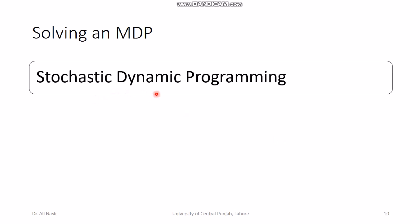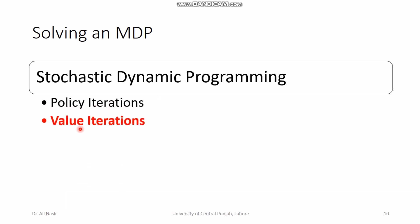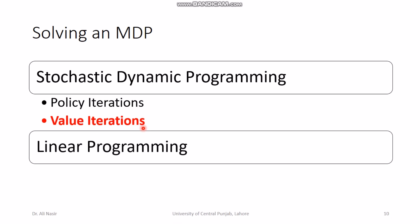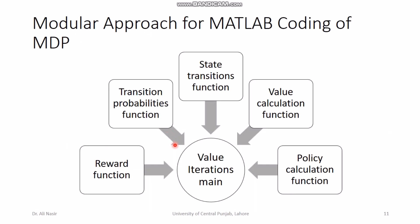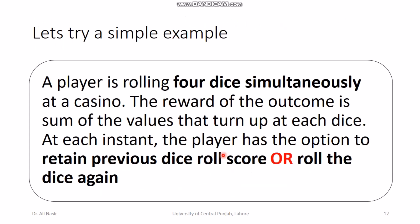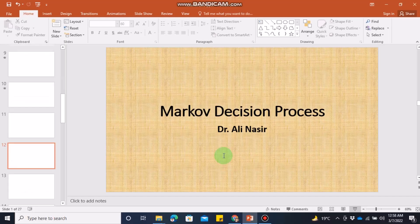The algorithms available to solve a Markov process are called stochastic dynamic programming. The two most popular are the policy iteration algorithm and the value iteration algorithm. Linear programming is also used to solve Markov process models. Bayesian network and dynamic Bayesian network based methods are also available. Once you have all five components of the model, you can solve it to develop an optimal policy using any of these algorithms.